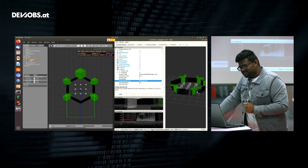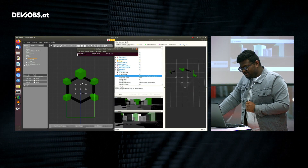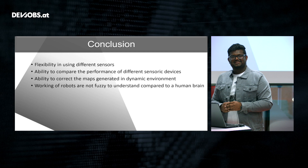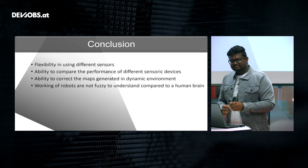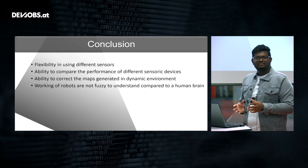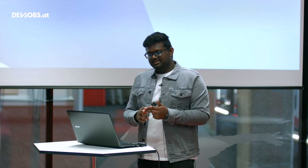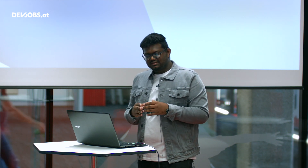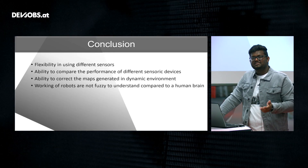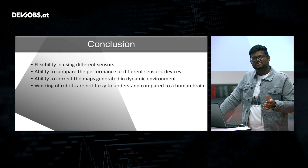This is the 3D representation of the map we just created. Moving to the conclusion: there are different approaches to solving SLAM problems, and this one is particularly flexible because it allows you to use different sensors — multiple cameras, depth cameras, stereo cameras with depth cameras, a laser scanner, LiDAR, or an IMU unit. All these data can be fused and synchronized to create maps, and the algorithm also allows comparison of the performance of different sensory devices.